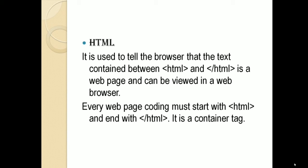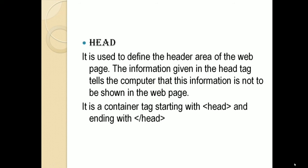The second type of basic tag is called head. A head tag is used to define the header area of your web page. For a web page there are usually two sections: one is the header part and the second one is the body part. All the information given in the head tag tells the computer that information is not to be shown on the web page. The head tag is a container tag and every web page coding must have its header specified.